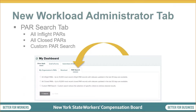This tab is where workload administrators can search the system for a few things, including: number one, all in-flight PARs. Search results will return up to 10,000 of the most recent in-flight PAR records with PAR statuses updated in the last 30 days. This includes any PAR that needs a response, has been responded to, has been assigned by that workload administrator, or may require response in the future and is currently navigating the PAR process.